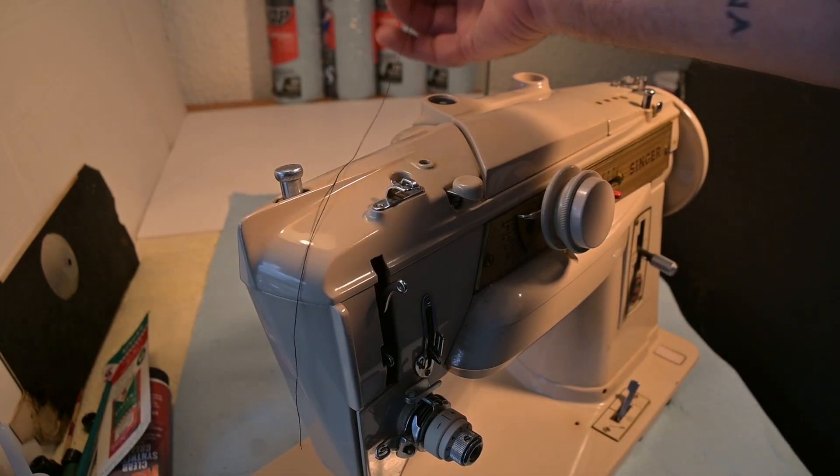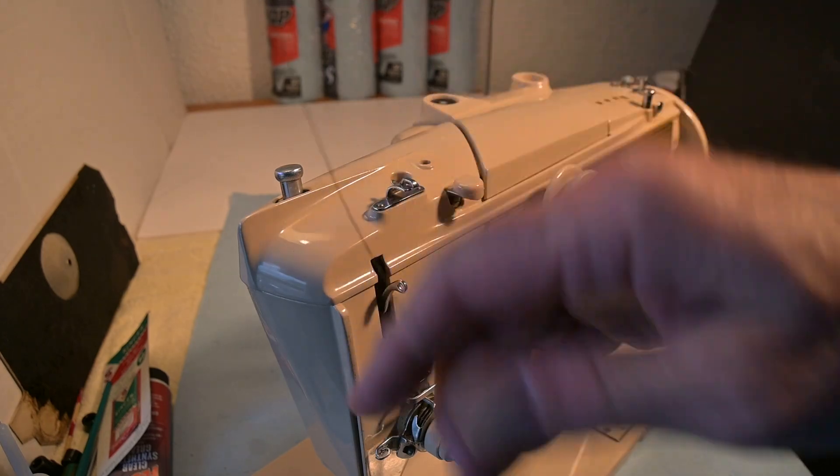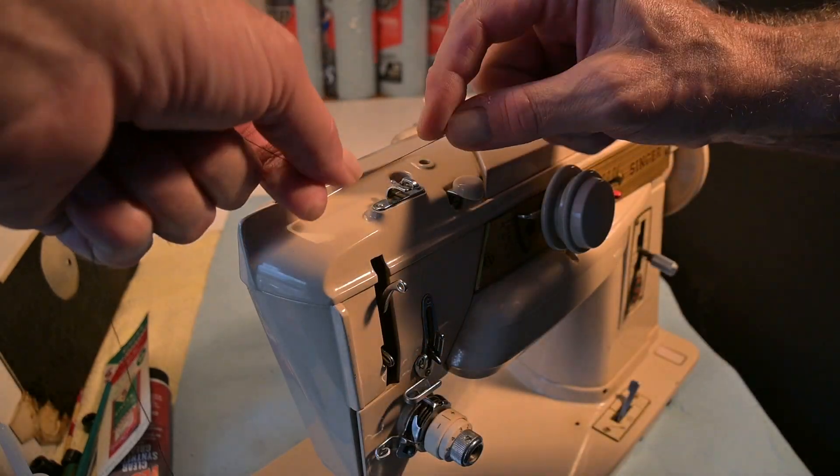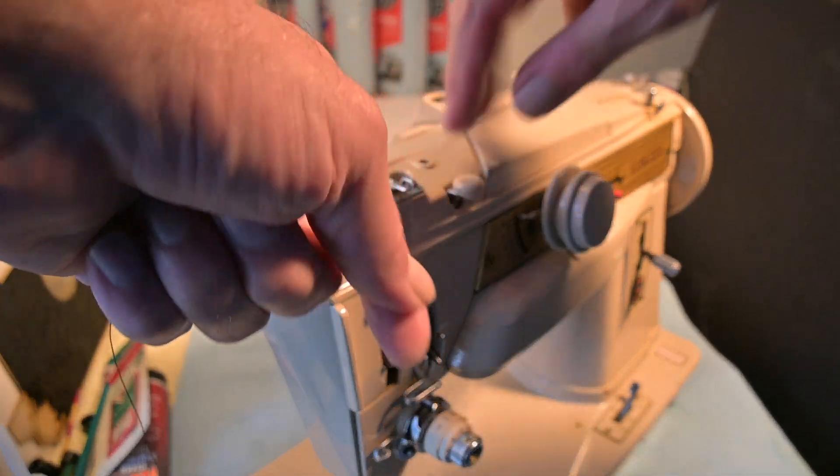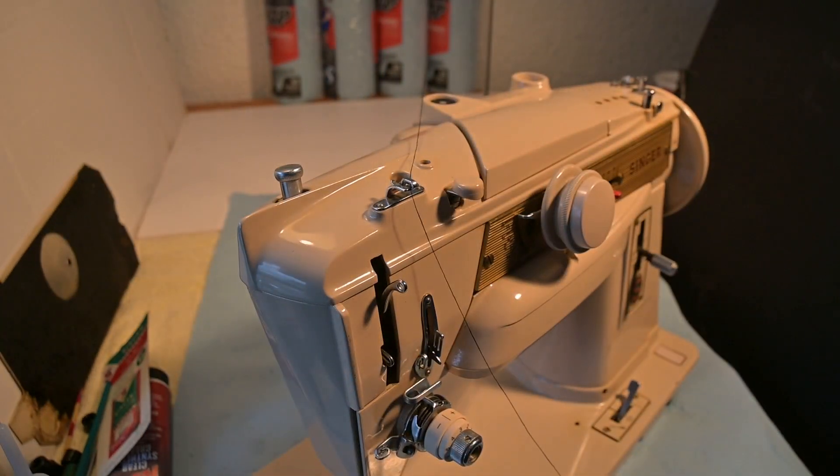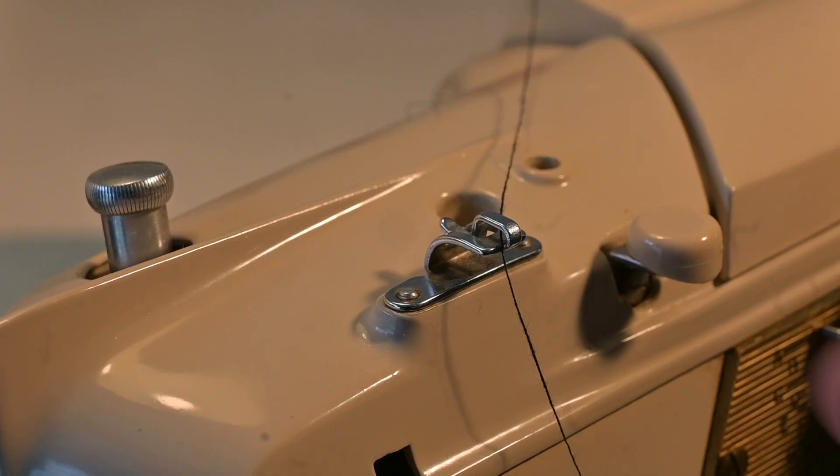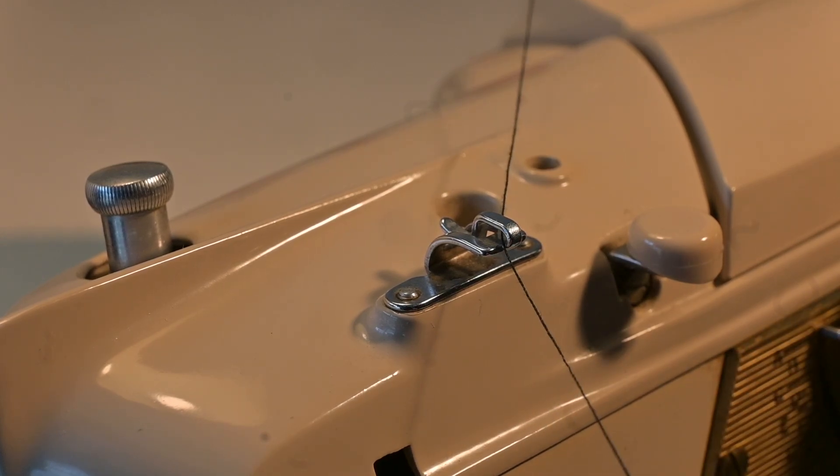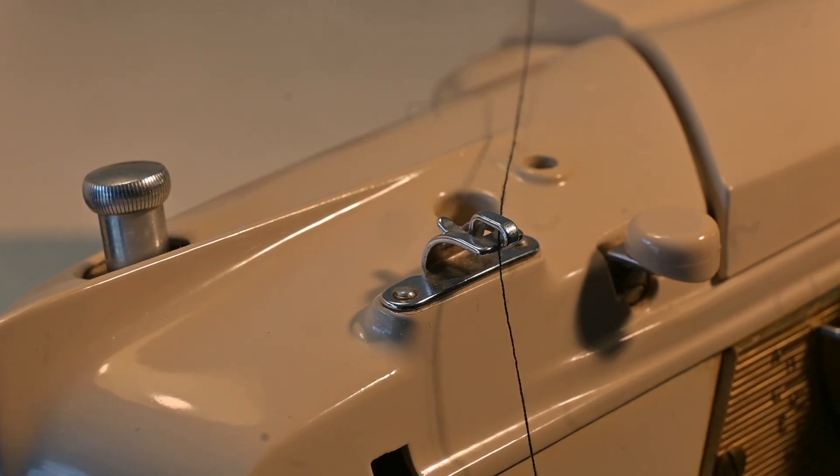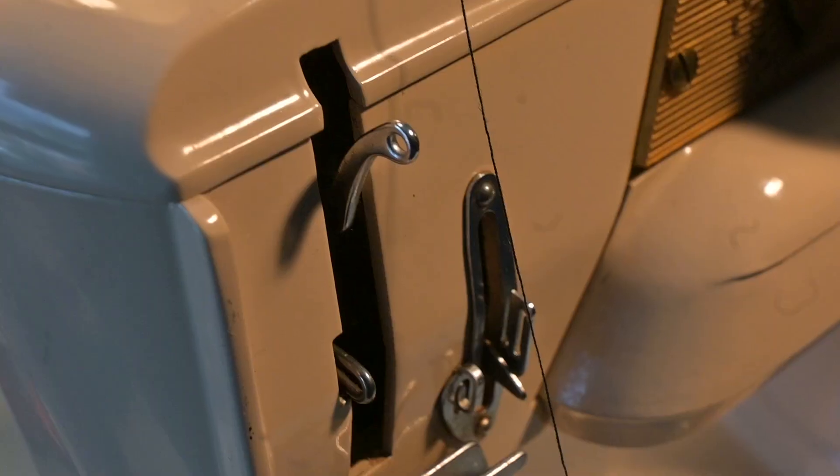Here I go, starting to thread the 411g. I've got the black thread coming off a thread spool. I loop it into the first guide up there. There you see, we have it through the guide.